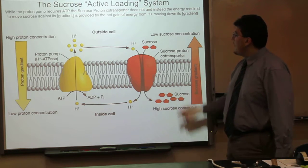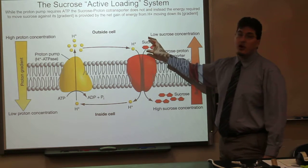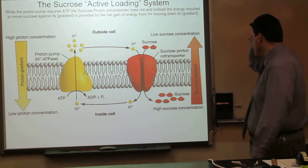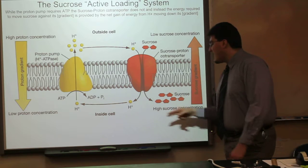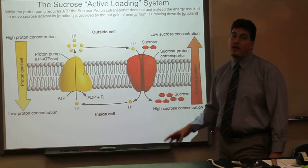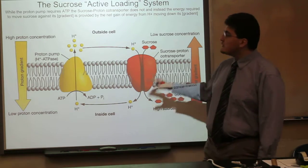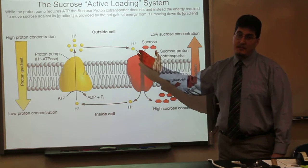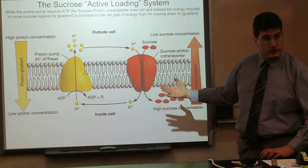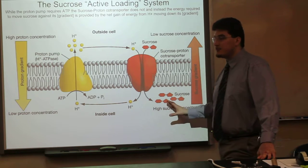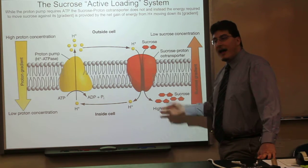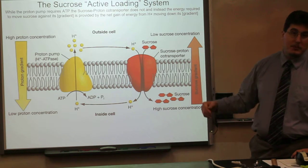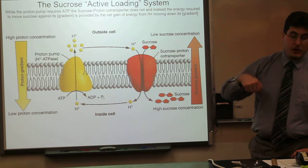If it weren't for this co-transporter, sucrose would not be able to cross against its concentration gradient at all. Now, that sucrose reaches a high concentration inside the companion cell. Sucrose is too large and too polar to cross back through the plasma membrane. So, with a high concentration gradient in the companion cell and a lower concentration in the phloem sieve tube element, sucrose will diffuse through the plasmodesmata into the phloem sieve tube element.